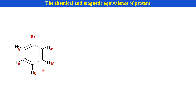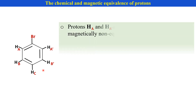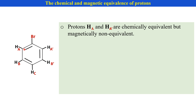In this case, there are three sets of protons: HA, HB and HC. Due to the plane of symmetry, these two protons are HA protons, these two protons are HB protons, and that is the third set, HC proton.